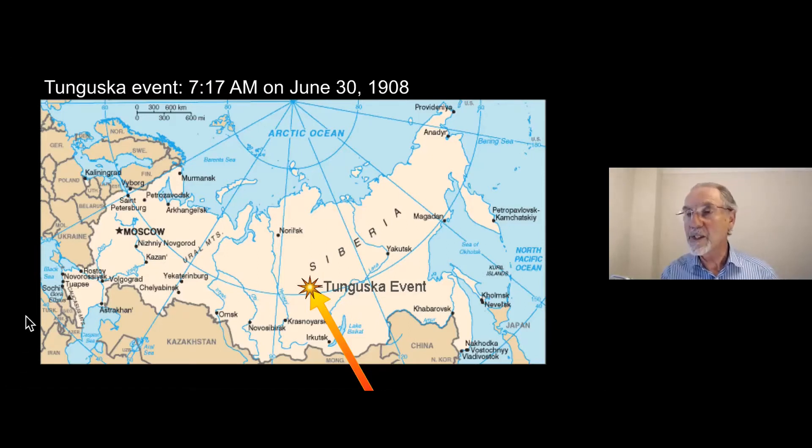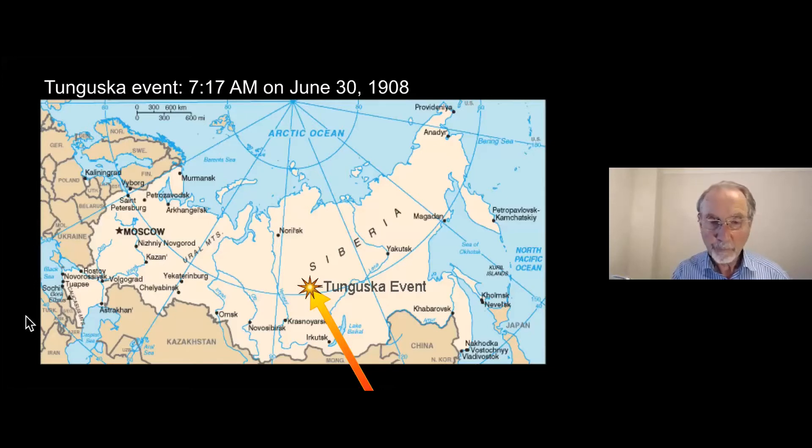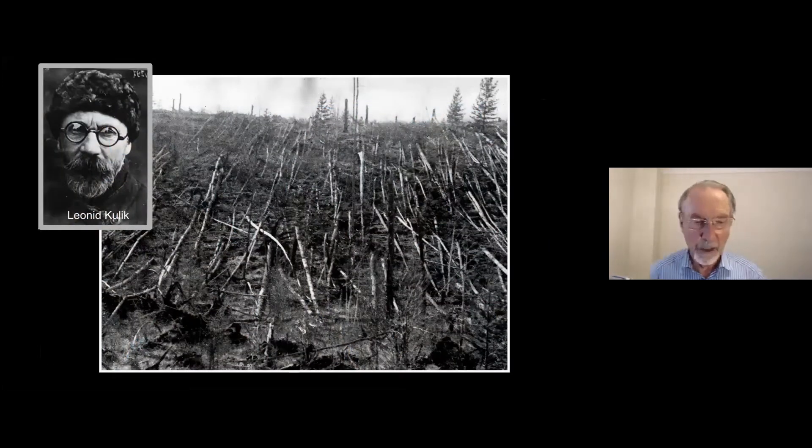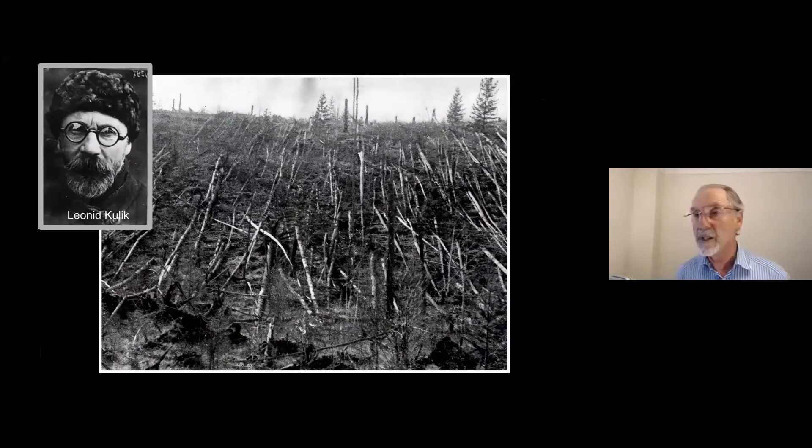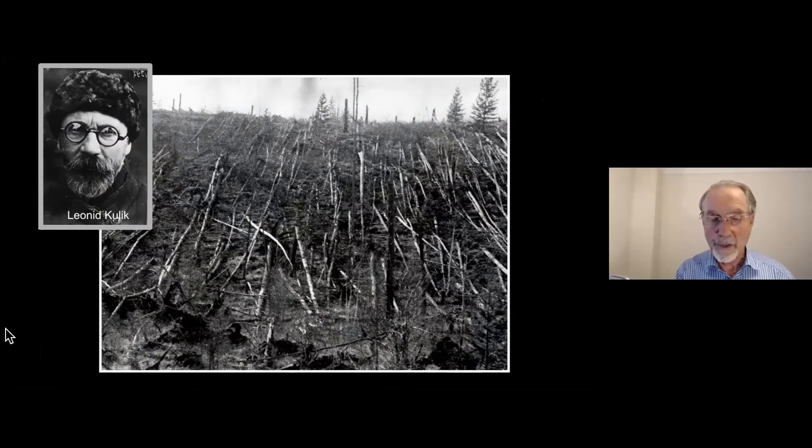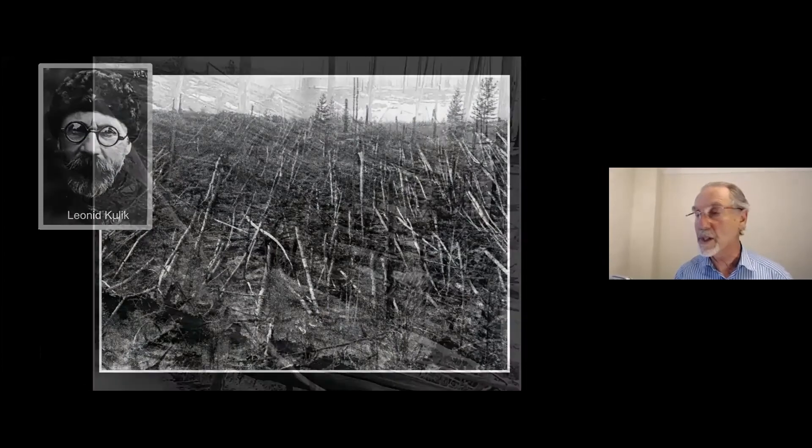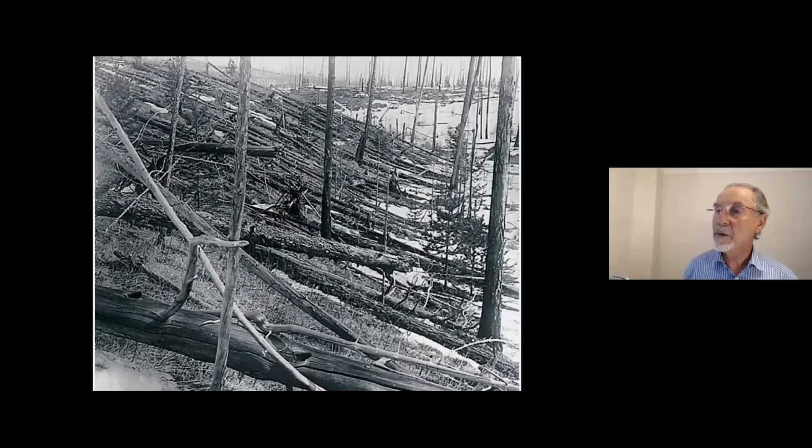The interesting thing is, if it arrived three minutes later, it would have arrived on top of somewhere in Europe. Now, this was a time of great social upheaval in Russia. So the first expedition only got to the region led by this Leonid Kulik 19 years later in 1927. And they photographed forests that were flattened for, this is in 1927, for 70 kilometers or so away from the epicenter. And they were scorched, the trees were scorched on one side. Although under the epicenter, the trees were all pointing vertically, with all the branches stripped off.